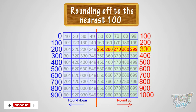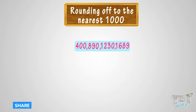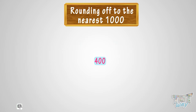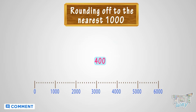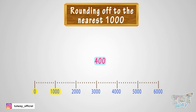Now we will learn rounding up numbers to the nearest 1,000. Let's start with 400. See the number line. Where can you fit 400 on this number line? It is somewhere between 0 and 1,000.